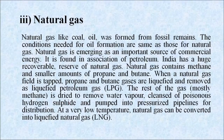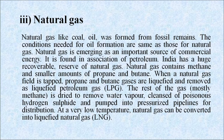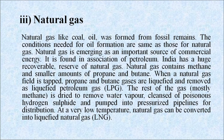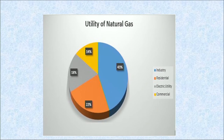Natural gas, like coal and oil, was formed from fossil fuels. The conditions needed for oil formation are the same as those for natural gas. Natural gas is emerging as an important source of commercial energy and is found in association with petroleum. India has a huge recoverable reserve of natural gas. Natural gas contains methane and smaller amounts of propane and butane. When a natural gas field is tapped, propane and butane gases are liquefied and removed as LPG. The remaining gas is dried to remove water vapor, cleansed of hydrogen sulfide and pumped into pressurized pipelines. At very low temperatures, natural gas can be converted into liquefied natural gas, or LNG. A pie chart shows that 43% of natural gas is used by industry, 22% by residential purposes, 18% for electric utilities and 14% for commercial purposes.